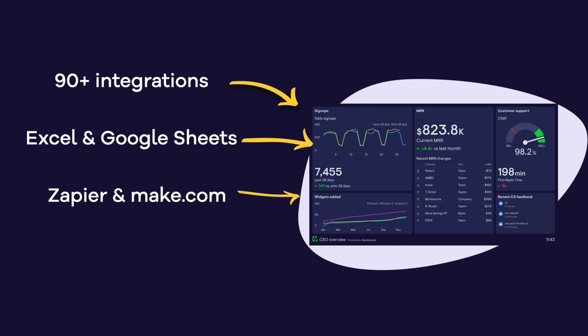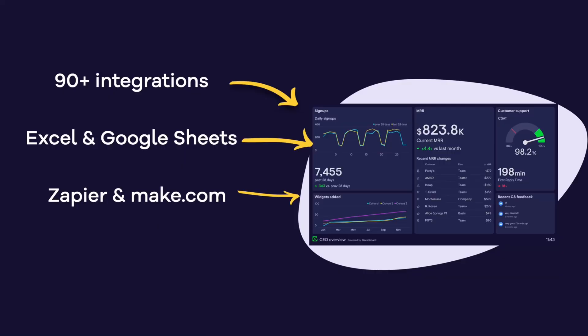Zapier or make.com can also be an option for bringing other data into GeckoBoard. If you can find your data source in their list of integrations, there's a good chance you can pull data through to GeckoBoard using an automation. Finally, if you've got data in another system, a database, or perhaps a custom-built tool, database integrations and GeckoBoard's datasets API gives developers some straightforward ways to send custom datasets to GeckoBoard, which can be used for building widgets in much the same way as our other integrations. If you're unsure about your options, just drop our team a message and we can help advise.